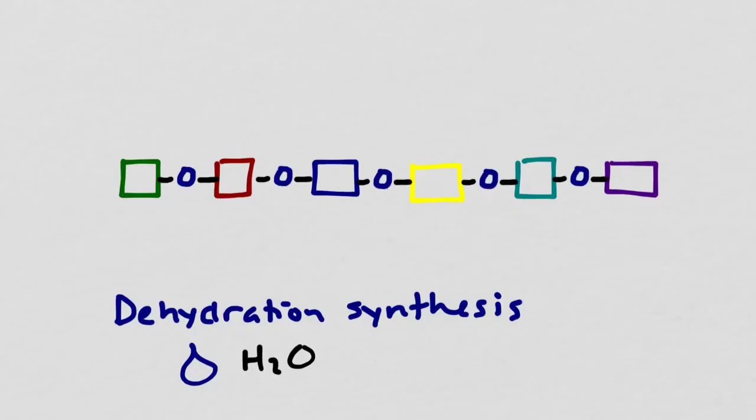After I connected all of these, I would have produced a total of six molecules of water. And as a result, I've produced this long chain of amino acids. Now this chain right here has a name. It's called a polypeptide. And the reason that it's called a polypeptide is because each of these bonds that are in between the amino acids are actually called peptide bonds.